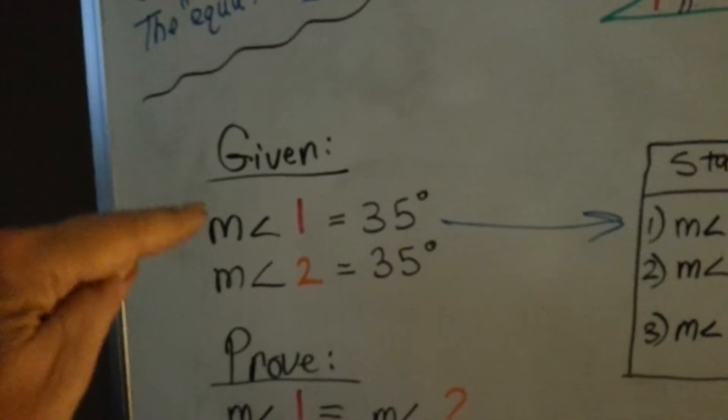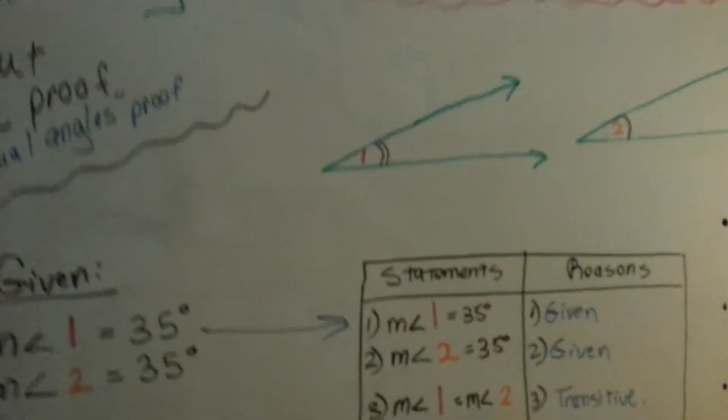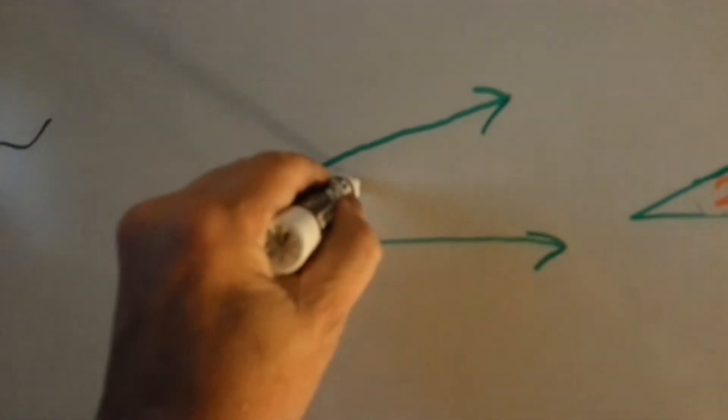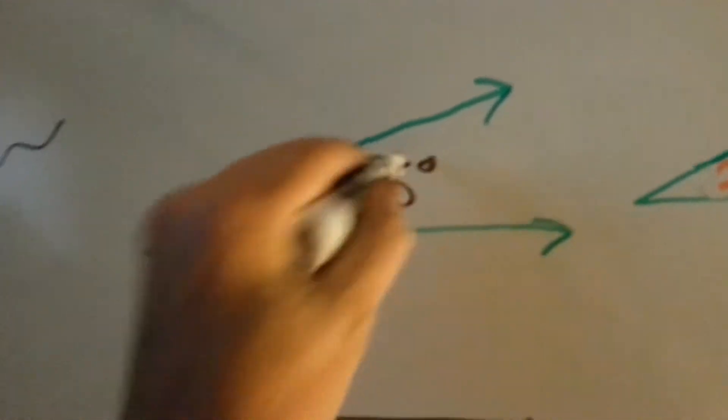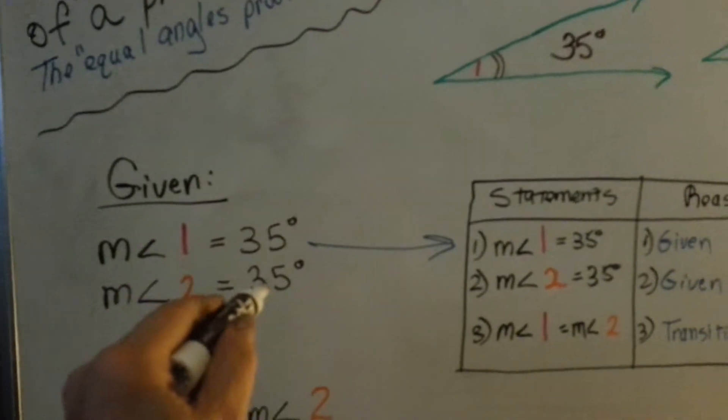So let's take a look at it. Given: The measure of Angle 1 equals 35 degrees. Okay, well, let's do that then. Let's say that that's 35 degrees because they're telling us it is. It's given. The measure of Angle 2 is equal to 35 degrees.